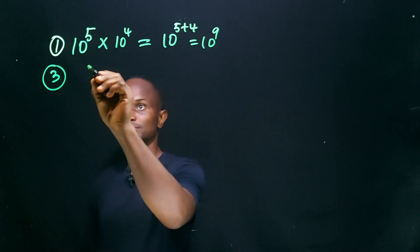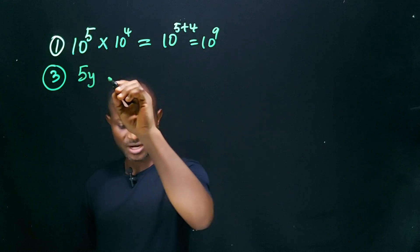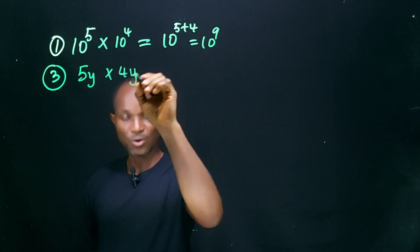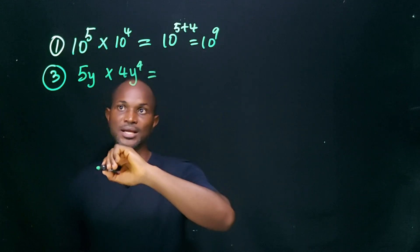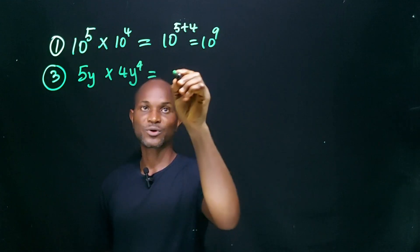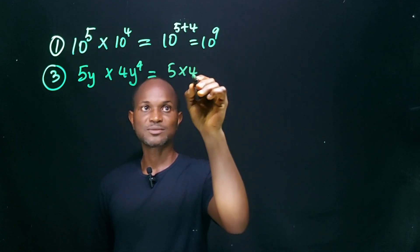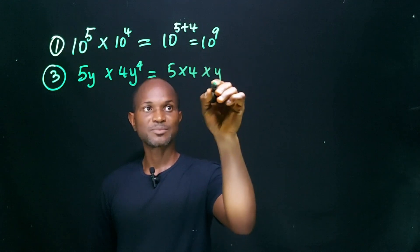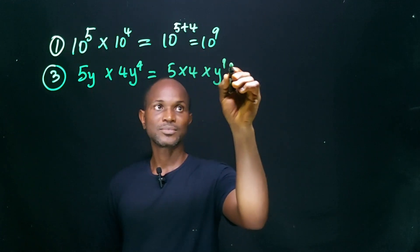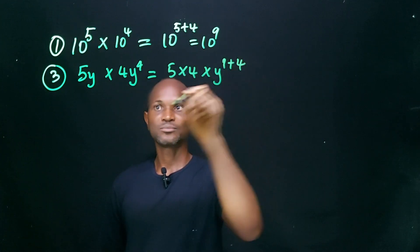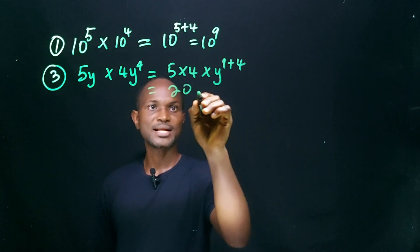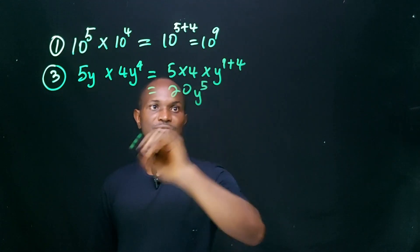Number 3: 5y multiplied by 4y raised to power 4. Here we deal with the coefficients first — 5 and 4. So we have 5 multiplied by 4, multiplied by y raised to power 1 plus 4 (because of the multiplication). This gives us 20y raised to power 5.